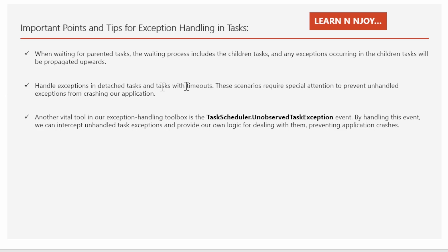Number two: handling exceptions in detached tasks and tasks with timeouts. These scenarios require special attention to prevent unhandled exceptions from crashing your application. Detached tasks work on their own without the main program keeping an eye on them. In other cases, tasks need to finish within a certain time frame. If something goes wrong during the execution of these tasks, the main program might not know about it — these errors could silently crash your program. You need to have a plan to catch any errors and deal with them gracefully so your program can continue running smoothly.